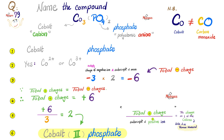Here is the answer in color, step by step. Step one: cobalt and phosphate. Step two: cobalt can give more than one type of cation — yes. Step three: 3− times 2 equals −6; therefore positive must equal +6. Positive 6 divided by 3 equals 2 — write Roman numeral II next to cobalt. Answer: cobalt(II) phosphate. Verify: 2+ times 3 equals +6; PO₄ −3 times 2 equals −6. Correct.